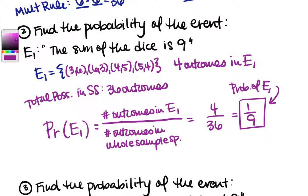We've taken this dice-rolling scenario and quantified it, giving us an idea of likelihood. For comparison, if we got something like 8 out of 9, that means 8 ninths of the time you can expect to get that event. But here with 1/9, we're not very likely to get that outcome.